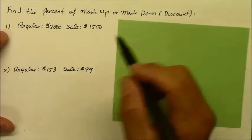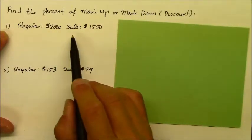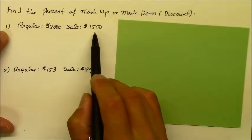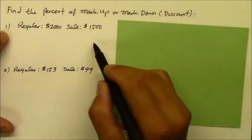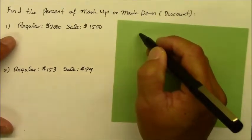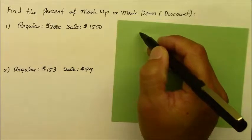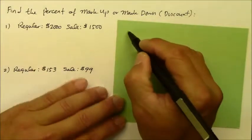Number one, we have a price that was originally $2,000. Now it's on sale for $1,500. So this is obviously a markdown, a discount. Some businesses would do that to attract customers or to get rid of inventory. To find the discount, what you want to do is take the regular price minus the sale price.